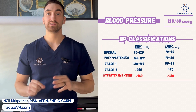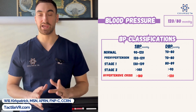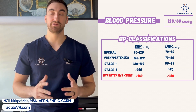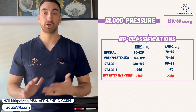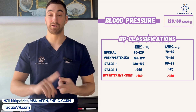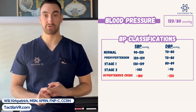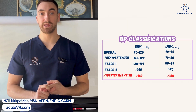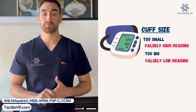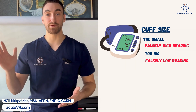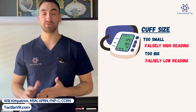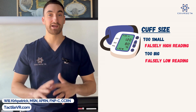Now blood pressure: normal blood pressure is 120 over 80. Anything over 120 is now considered pre-hypertension. Key nursing consideration: before putting the cuff on, make sure it's the right size. A cuff too small gives a false high reading; a cuff too big gives a false low reading. Write that down — it's likely going to appear on your nursing exams.